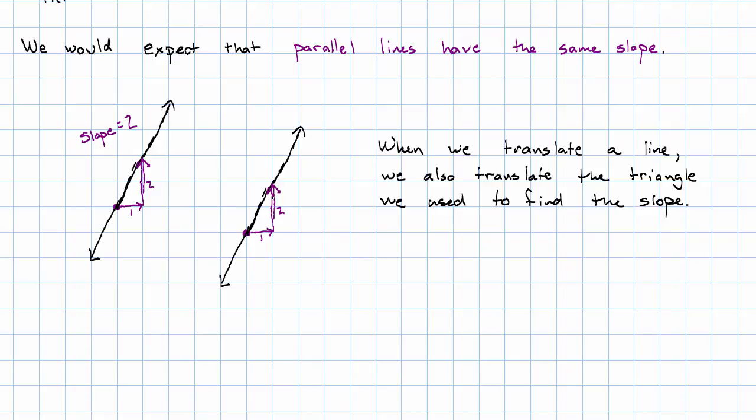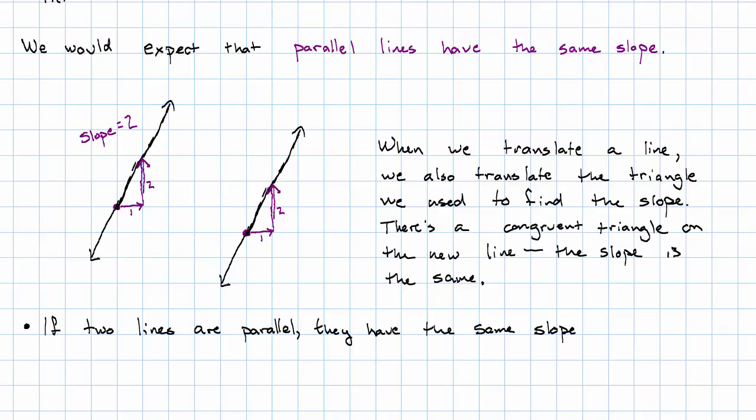In other words, there's a congruent triangle on the new line, and therefore the slope is going to be the same. If two lines are parallel, we know that they have the same slope.